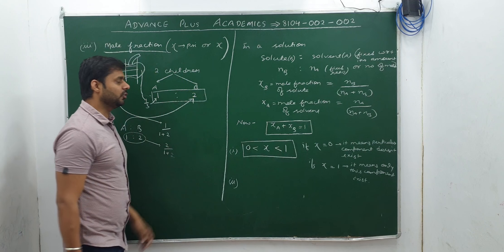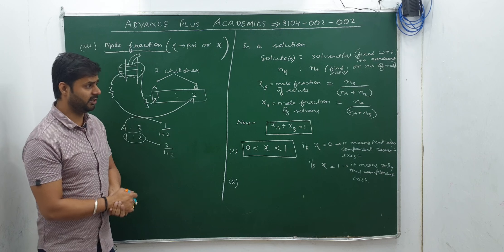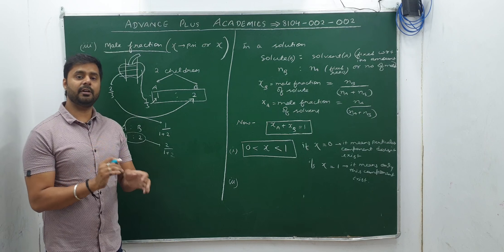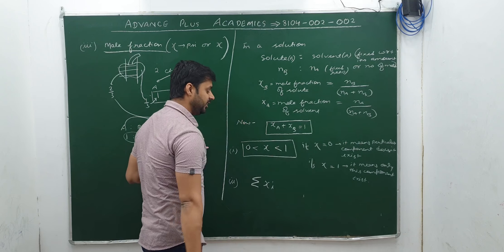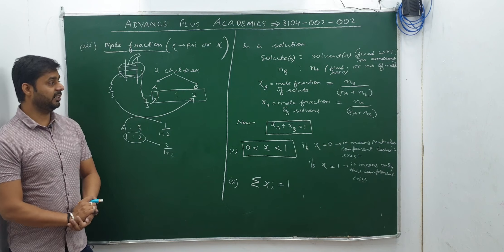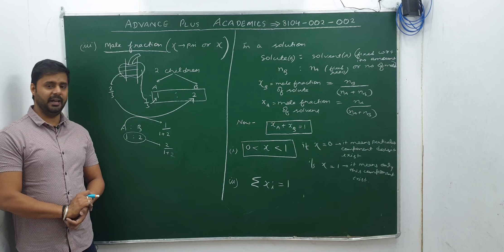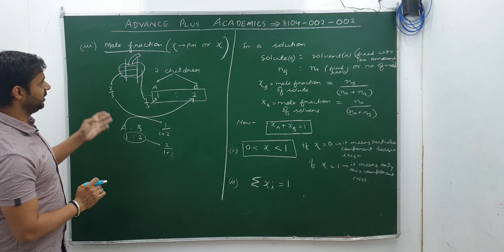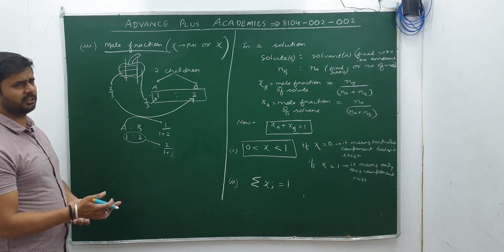It is not always that we have one solute. Sometimes we have ternary, quaternary, or even pentanary solutions. Whatever N number of components are in the solution, the sum total of the mole fractions of all components will always be equal to 1. Note this down. After that we will start with the numericals, and later on we will go with the tricks and shortcut formulas. Initially we have to understand the terms — mole fraction, molality, molarity, formality, and percentage calculations.